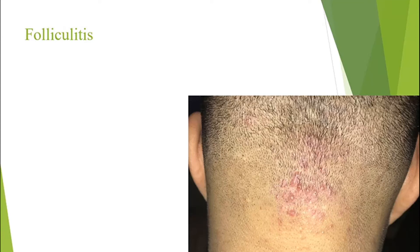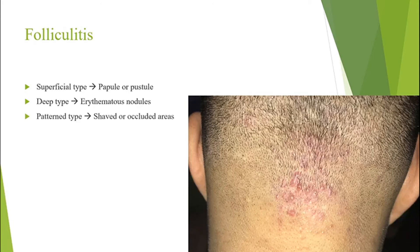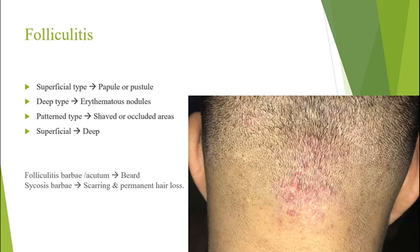Starting with folliculitis — the superficial type shows papules and pustules, while the deeper lesions are erythematous nodules. There is also pattern folliculitis in areas that were shaved or occluded, and the superficial form can evolve into the deep form. Folliculitis barbae or acutum affects the beard, and the deep-seated version is sycosis barbae, which leads to scarring and permanent hair loss.